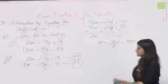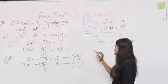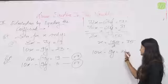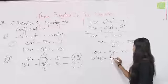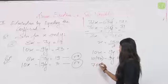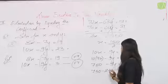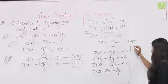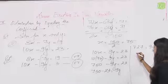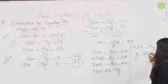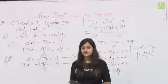अब x की value second equation में put करते हैं: 10(5) − 9y = 23, so 50 − 9y = 23, so 9y = 27, so y = 3। तो equating the coefficient method से x और y की value find out कर सकते हैं।